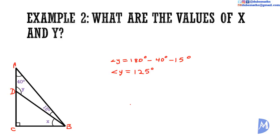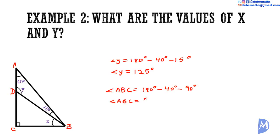Consider the outer triangle A, B, C. The total angle at B — angle ABC — can be calculated given the information we have. The three angles in this big triangle equal 180 degrees. So, the total angle at B, added to 40 degrees at A and 90 degrees at C, gives 180 degrees. Thus, angle ABC is equal to 180 minus 40 minus 90. Angle ABC is equal to 50 degrees.